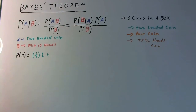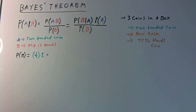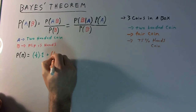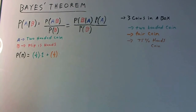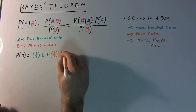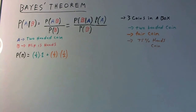Plus — remember our AND and OR rule — it can be either the two-headed coin, or the fair coin, or the biased coin. For the fair coin, the probability of picking it is again one-third, times the probability that a fair coin will come up heads, which is obviously one-half, because it would be either heads or tails. The reason we're multiplying is because you have to pick it and it has to come up heads.